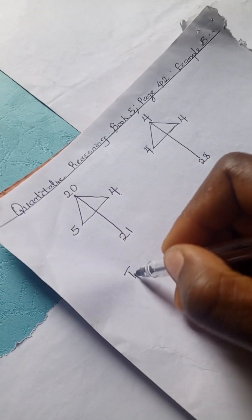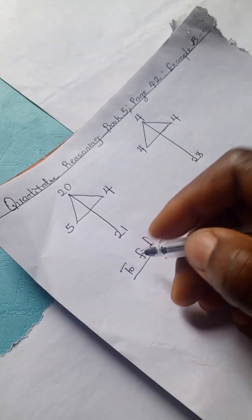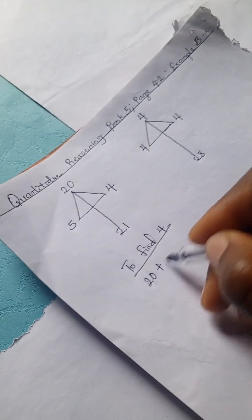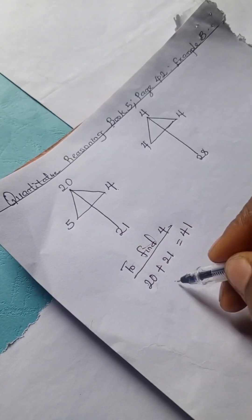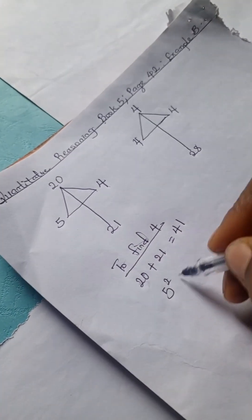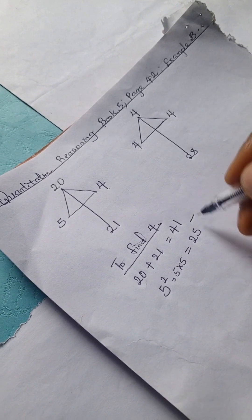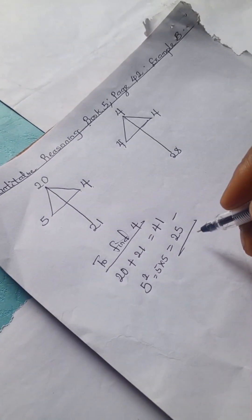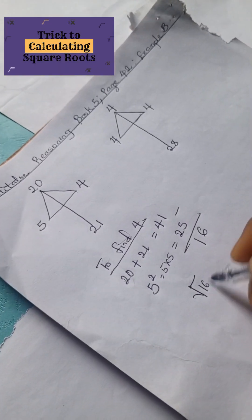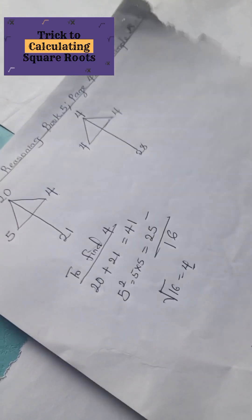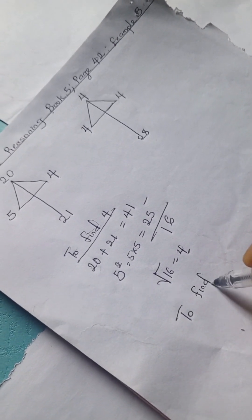Let's find 4. To find 4, we're going to have 20 plus 21, which is 41. We're going to square 5. When we square 5, which is 5 times 5, that's 25. We're going to subtract 25 from 41, and when we do that, we have 16. So square root of 16 is 4. That's how they got 4.